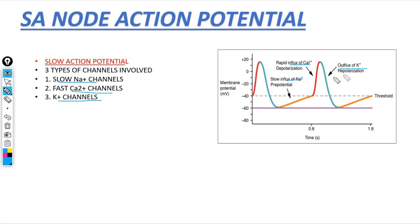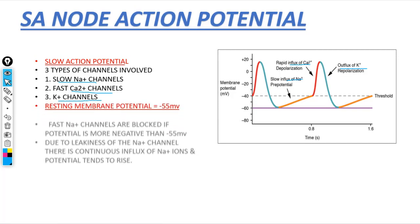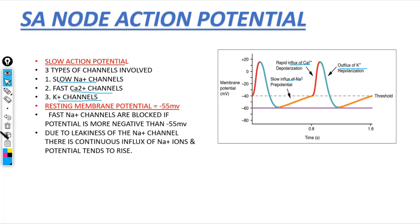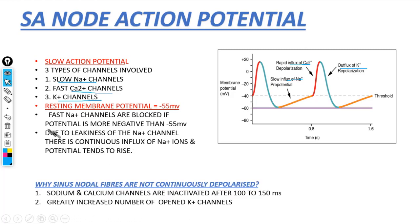The normal resting membrane potential of the SA node is –55mV. Fast sodium channels are blocked if the potential is more negative than –55mV. Due to leakiness of the sodium channel, there is continuous influx of sodium ions and the potential tends to rise. Sinus nodal fibers are not continuously depolarized because of two factors: sodium-calcium channels are inactivated after 100 to 150 ms, and a greatly increased number of opened potassium channels.